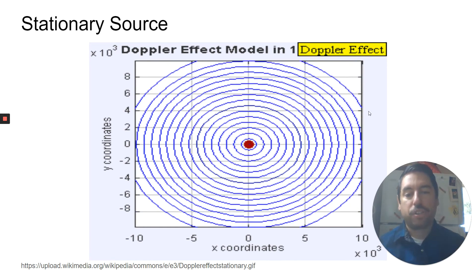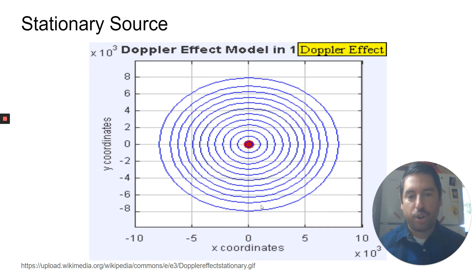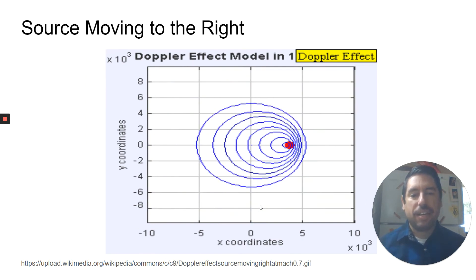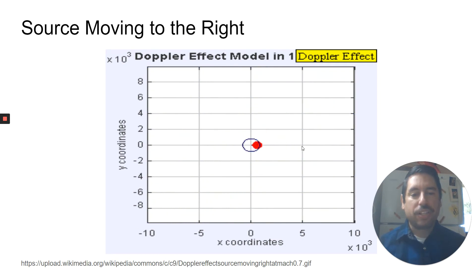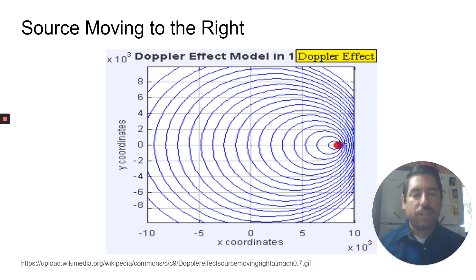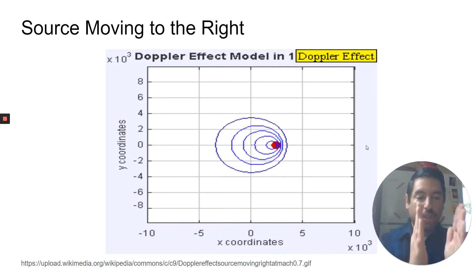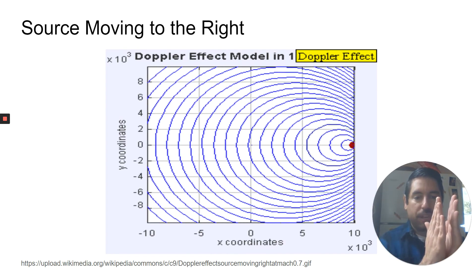However, if our bug in the water starts to swim, or if our car horn or car engine starts to move, what happens is this. In the direction that it's moving, those waves are getting squished together. And the faster the bug swims, or the faster the car moves, the more squished together those waves will get.